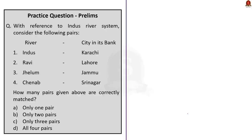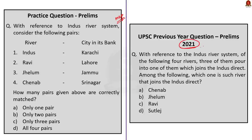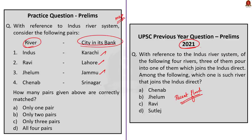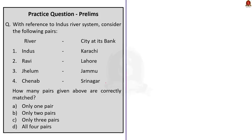The next question is a map-based question about the Indus River system. There was a question about it in 2021 prelims and recent floods in the Indus River system make it important for 2023 as well. The question: with reference to the Indus River system, consider the following pairs — Indus/Karachi, Ravi/Lahore, Jhelum/Jammu, Chenab/Srinagar. How many pairs given above are correctly matched? Only one pair, only two pairs, only three pairs, or all four pairs?